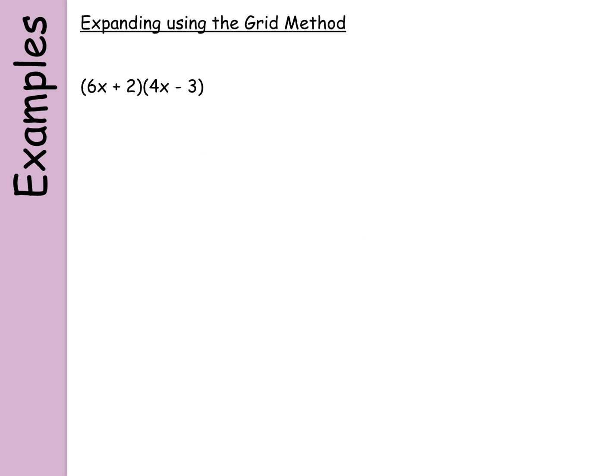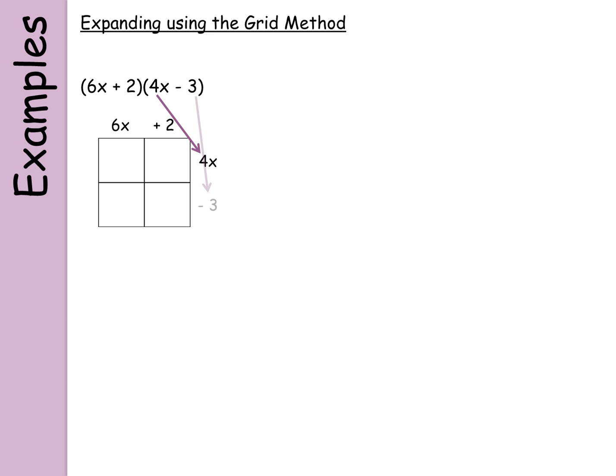This is probably one of the most complicated examples you'll see. We've got coefficients of x — numbers in front of the x — and we've also got a negative sign to deal with. So it's putting what we've looked at in the last two examples together. As before, split up: we've got 6x and plus 2, and then 4x and minus 3. Keep the signs with the numbers so it makes the multiplication easier.